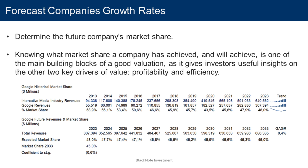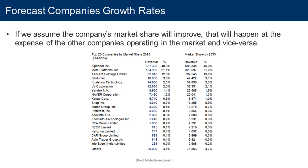By multiplying the total industry future revenues by the expected market share, we obtain the expected future revenues of the company we are analyzing. However, projecting the company's future market share is simpler in theory than in practice. Investors tend to forget that the company they're analyzing isn't the only player — an industry is a complicated amalgamation of many firms, each trying to emerge from the mess. If we assume the company will improve its market share, that will happen at the expense of other companies, which will see their market share decline or worse go bankrupt. Conversely, if market share declines, other companies will expand and possibly cut out the company we are analyzing.